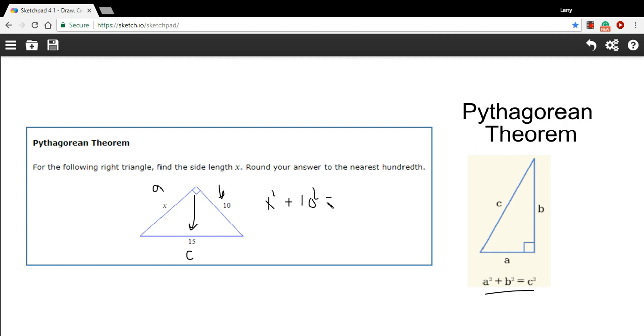So we've got A squared plus B squared, and then our value for C is 15, so that equals 15 squared. So we've got X squared plus, well, 10 squared is 100, and 15 squared is 225.